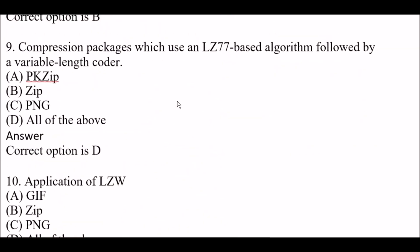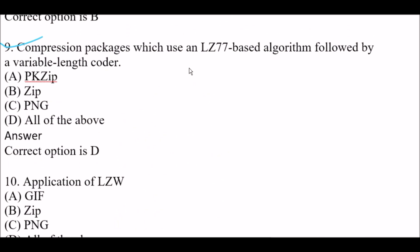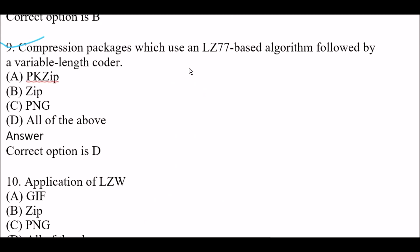Next question: Compression packages which use an LZ77-based algorithm followed by a variable-length coder — Option A: PKZip. Option B: Zip. Option C: PNG. Option D: All of the above. The right answer is Option D — all of the above.